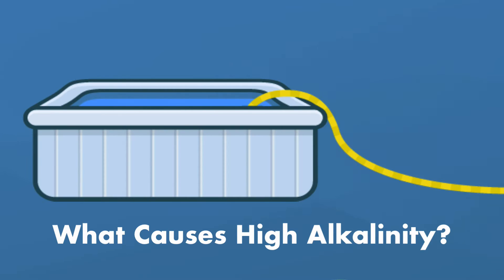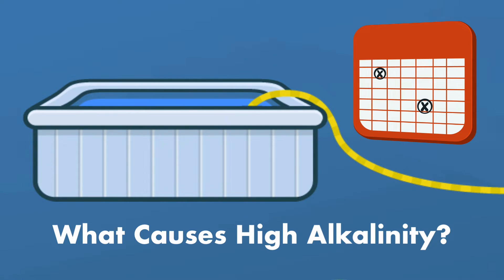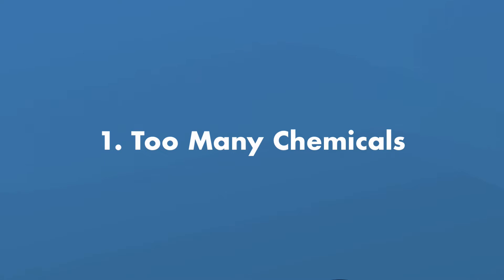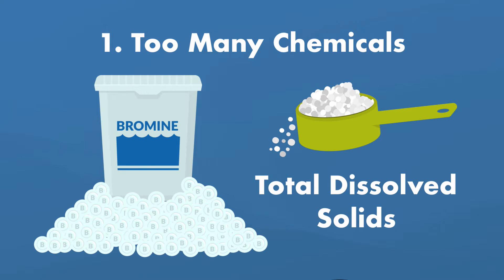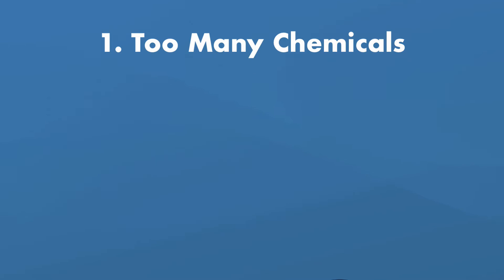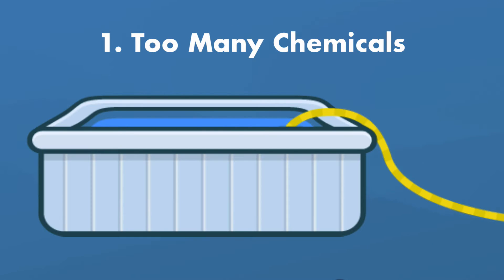If you drain and clean your hot tub every three to four months, like we recommend, your alkalinity levels should be fine. But if they're too high, here are some common reasons why. One: too many chemicals. You could be adding too many chemicals to your hot tub, which can increase your total dissolved solids, or TDS. This will mess with your hot tub's water chemistry, and you can avoid this issue if you drain and clean your hot tub every three to four months.